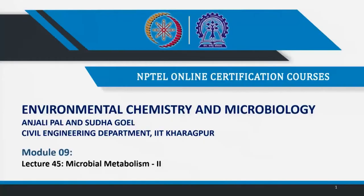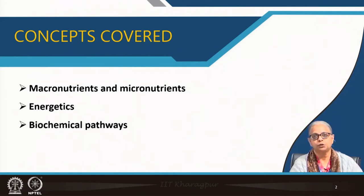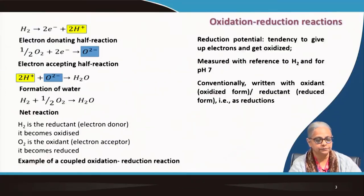Welcome everyone to lecture number 45 and the second part of microbial metabolism. We are going to look at how cells derive energy from different combinations of electron donors and acceptors.